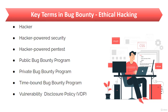VDP often takes the form of a security email address — for example, if you are finding bugs for Google, you report the vulnerability to security@google.com. This practice is outlined in the DoJ framework, that is the Department of Justice of the United States, for a vulnerability disclosure program for online systems, and it is defined in ISO standard 29147.